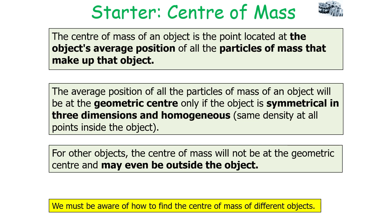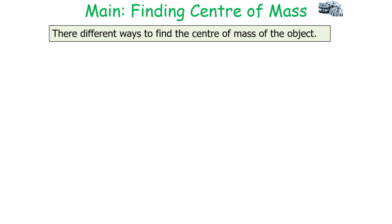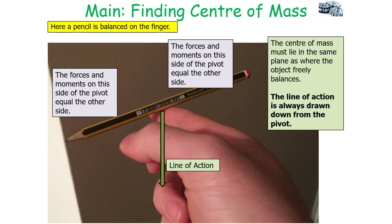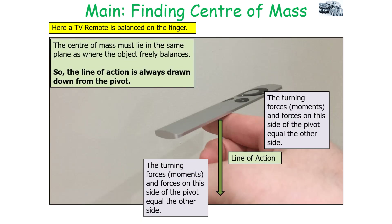There are different ways to find the centre of mass of an object. For all objects, the centre of mass is directly below a point where the object can be freely balanced, since an object can be balanced if a pivot is placed at the centre of mass — because the forces and moments are balanced on either side. In this diagram, a pencil is balanced on a finger; where it balances, the forces and moments on either side are equal, so the centre of mass lies in the same plane as the balance point, and we draw a line of action down from the pivot. Similarly, a TV remote balanced on a finger demonstrates the same principle.